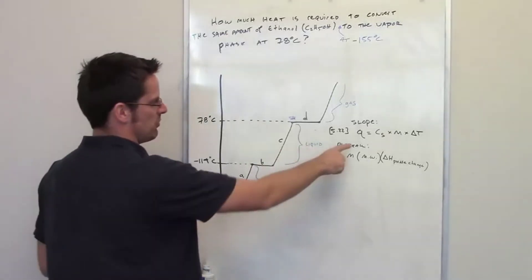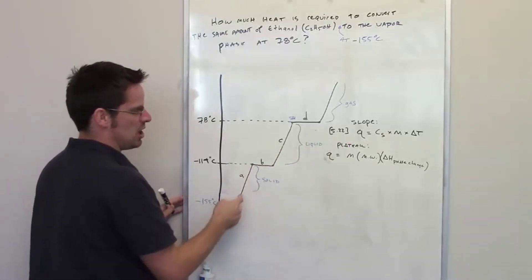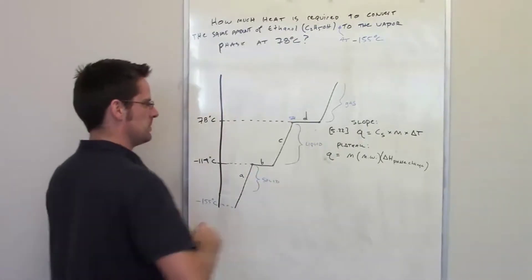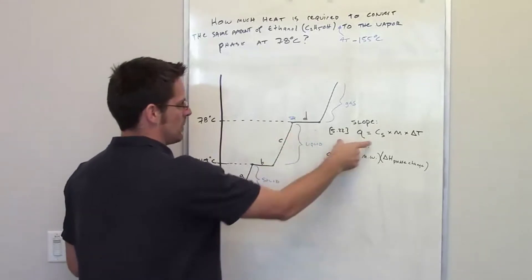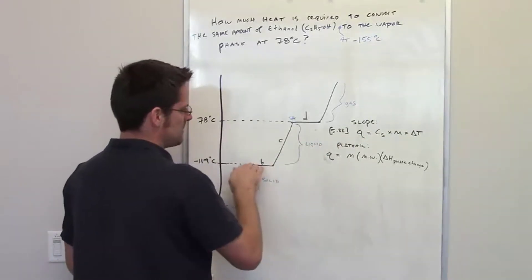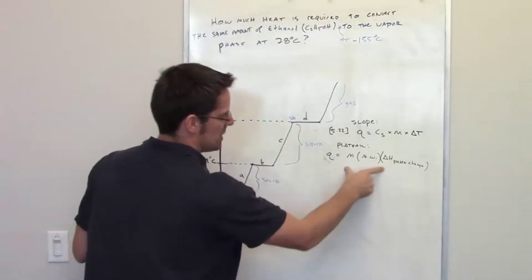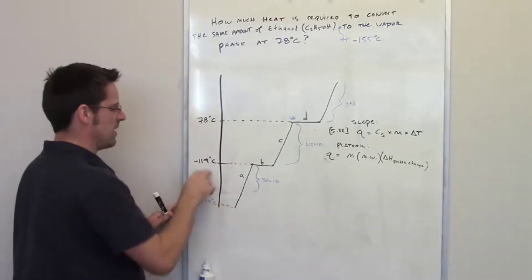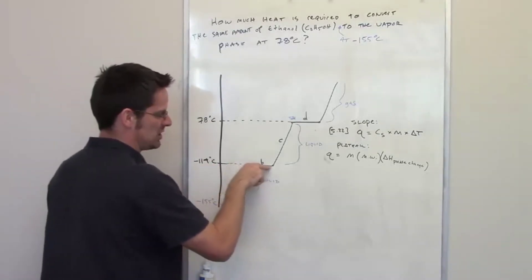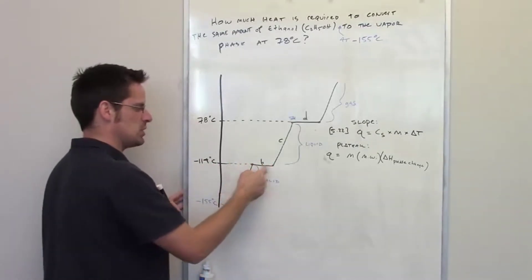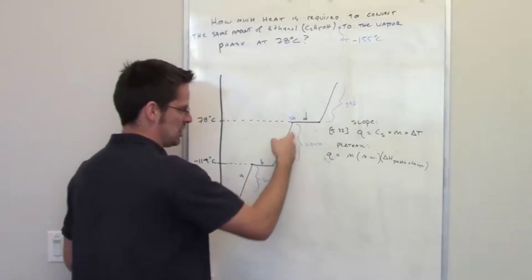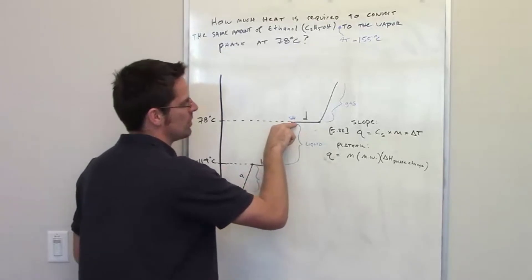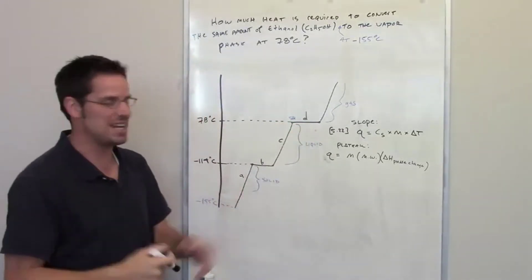Any time you're going up a slope, use equation 5.22 — which will be provided on the exam. Any time you're going across a plateau, use the plateau equation. So the journey here is: go up slope A from negative 155 to negative 114, then across plateau B converting solid to liquid, then up slope C from negative 114 to 78, and then across plateau D. That is the full journey we have to calculate.